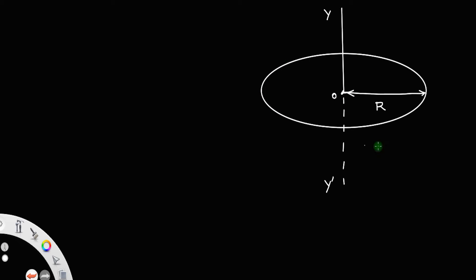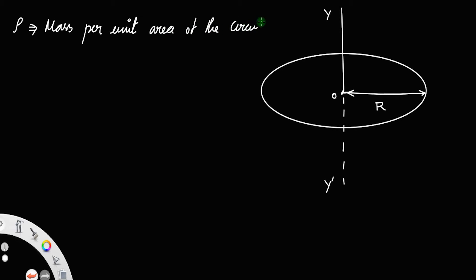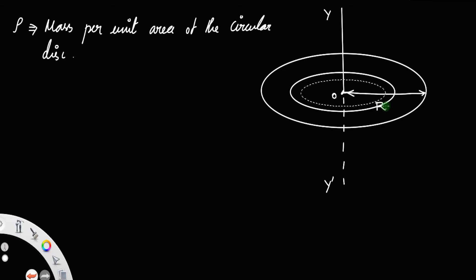Let this disk have a uniform mass per unit area. Let rho be the mass per unit area of the circular disk. Now, let us consider a thin strip of area like this. Let the thickness of this thin strip be dx and let the thin strip be at a distance of x units from the axis.